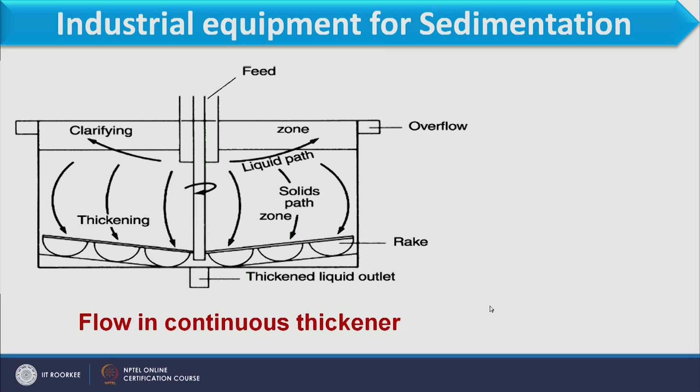This is the schematic of a continuous thickener, where we have the tank in which racks are available at the bottom. The purpose of these racks is to collect the sludge which is available at the bottom towards the centre so that discharge becomes easier.